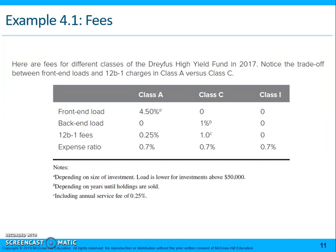The example shows fees for three different classes of a Driehaus high-yield fund in 2017. There's certainly a trade-off between front-end loads and fees and so forth. The front-end load on the Class A is 4.5%. If you go down to the footnote, it shows you that the load is lower if you have more money to invest. So if you are investing over $50,000, the load would be lower.